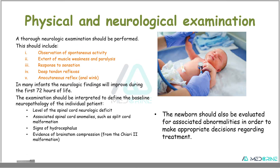A physical and neurological examination needs to be done in babies born with features of Spina Bifida. This includes observation of spontaneous activities, extent of muscle weakness and paralysis, response to sensory stimuli, deep tendon reflexes, and an anocutaneous reflex known as the anal wink. In many infants, neurologic findings will improve during the first 72 hours of life. The examination should identify the level of the spinal cord neurologic deficit, associated spinal cord abnormalities suggesting split cord malformations, signs of hydrocephalus, and evidence of brainstem compression from the Chiari 2 malformation. The newborn should be evaluated for associated abnormalities to make appropriate treatment decisions.